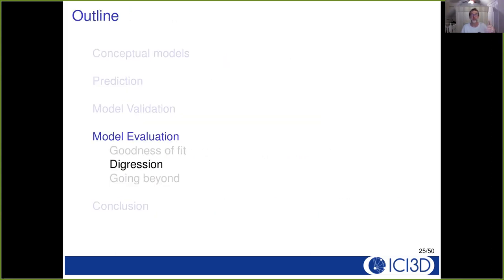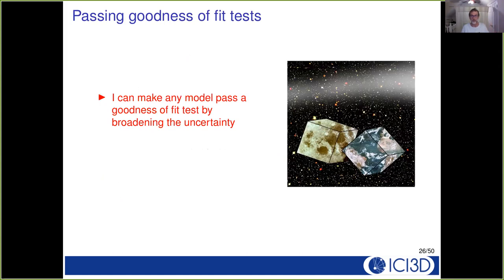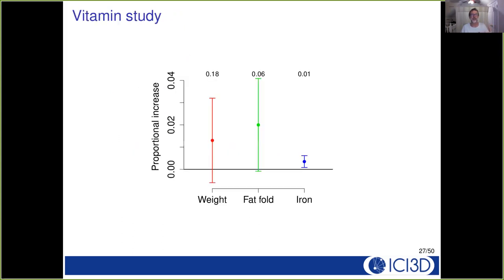Why do we use p values in biology? Certainly I can make any model pass a goodness of fit test by broadening the uncertainty. That does not make it a good model. The key to statistical significance is not whether something is large and not whether something is important. An effect is statistically significant if we can clearly see it.